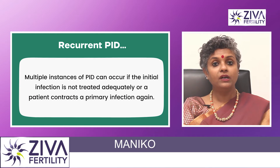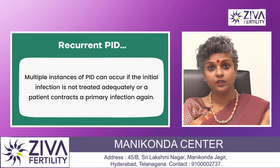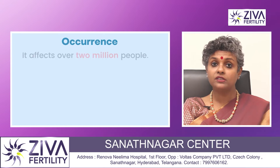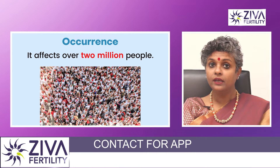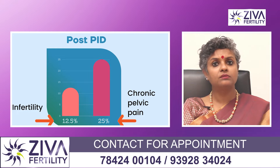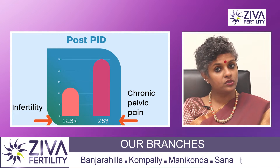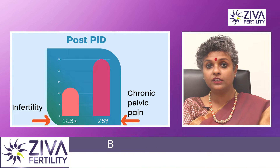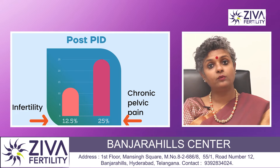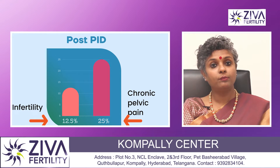Recurrent PID: multiple instances of PID can occur if the initial infection is not treated adequately or a patient contracts a primary infection again. It affects about 2 million people worldwide, and about 12.5% of them will face post-PID infertility. Around 25% will develop chronic pelvic pain.